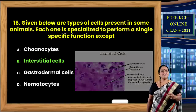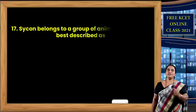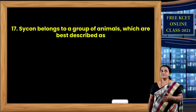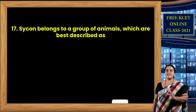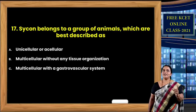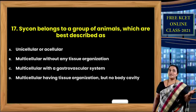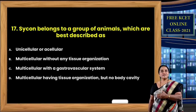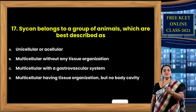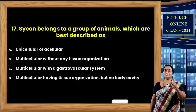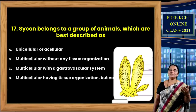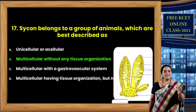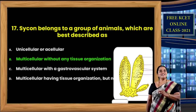Question 17: Sycon belongs to phylum Porifera. It belongs to a group described as — options: unicellular; multicellular without any tissue organization; multicellular with gastrovascular system; multicellular having tissue organization but no body cavity. All animals are multicellular, so option A (unicellular) is gone. Sycon belongs to phylum Porifera — the correct option is B: multicellular animals without any tissue organization.